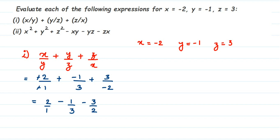Now we are adding fractions, and when adding fractions the denominator has to be the same. Here we have 1, 3, and 2, so they are not the same. We need to take the LCM of the denominators. The LCM of 1, 2, and 3 is 6.